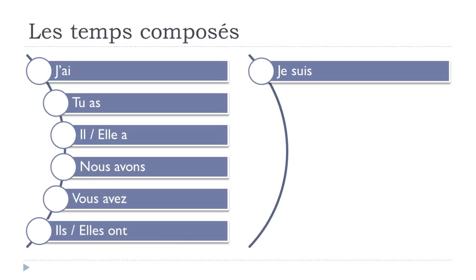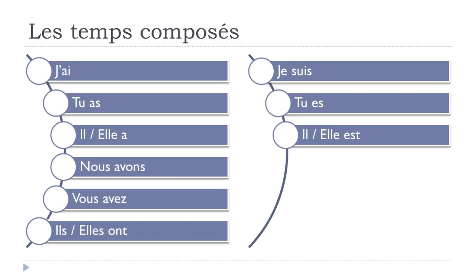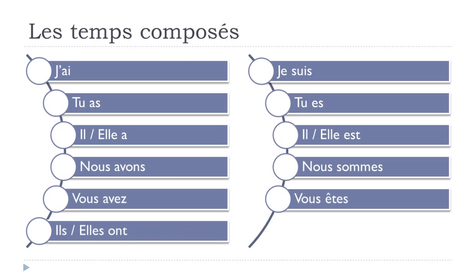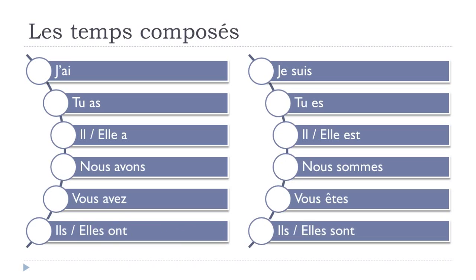Être at the present tense: je suis, tu es, il est, elle est, nous sommes, vous êtes, ils sont, elles sont. Note that tu es and il est are phonetically the same sound — quite open. Final S in je suis and nous sommes is not pronounced. Make the liaison in vous êtes, ils sont, elles sont.